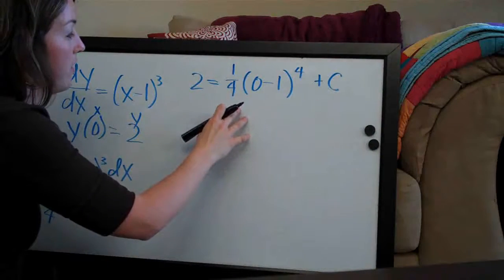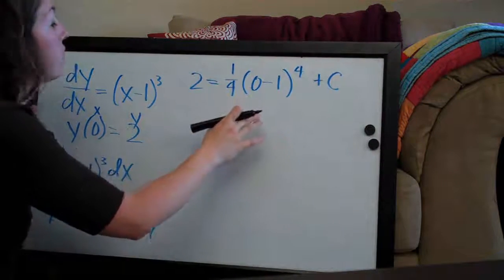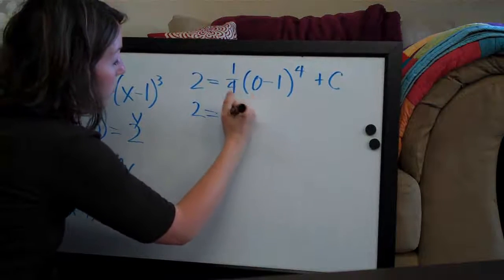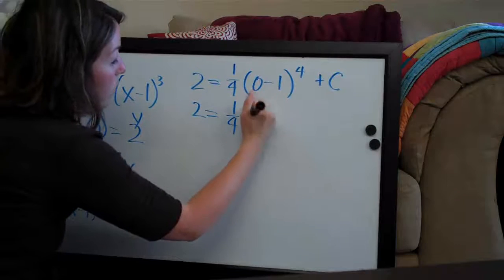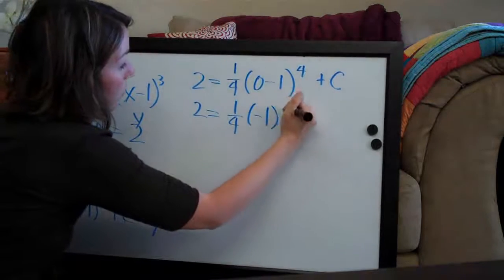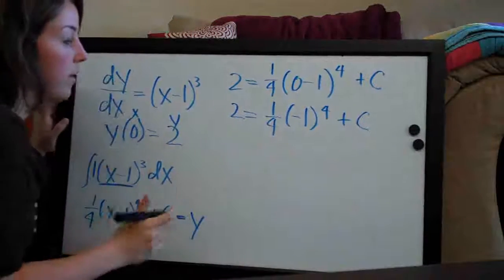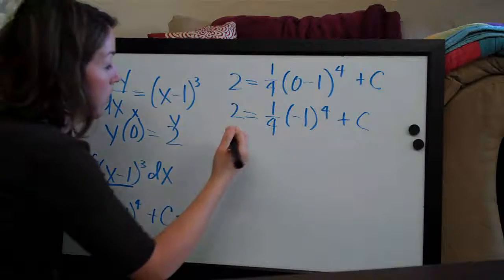So now that we have this, we can simplify and solve for c. So we'll have 2 = 1/4, 0 minus 1 is -1 to the fourth plus c, and -1 to the fourth is 1.